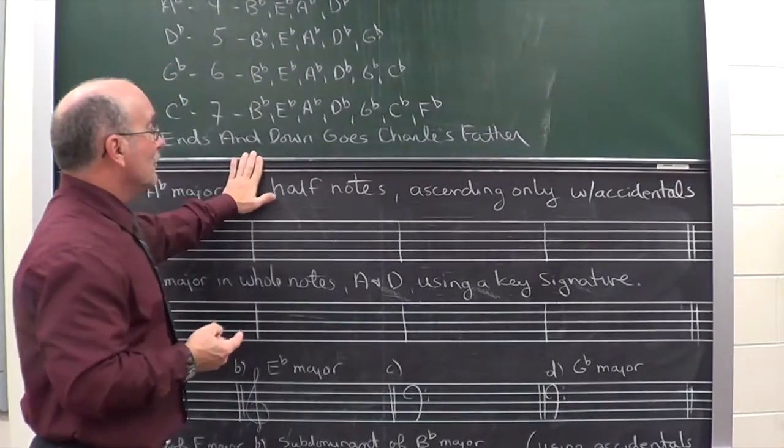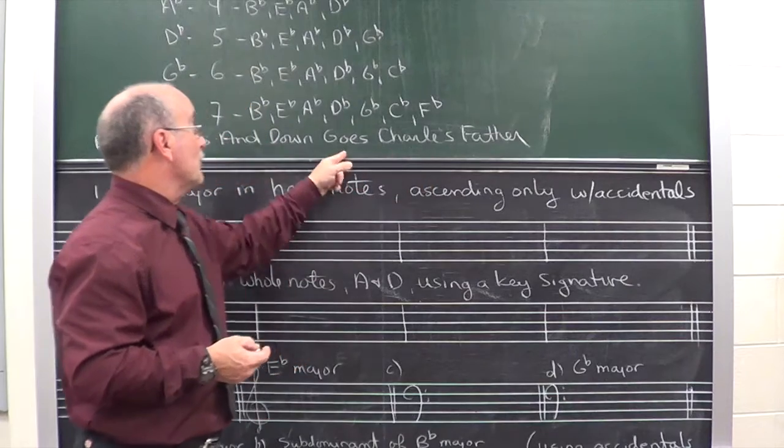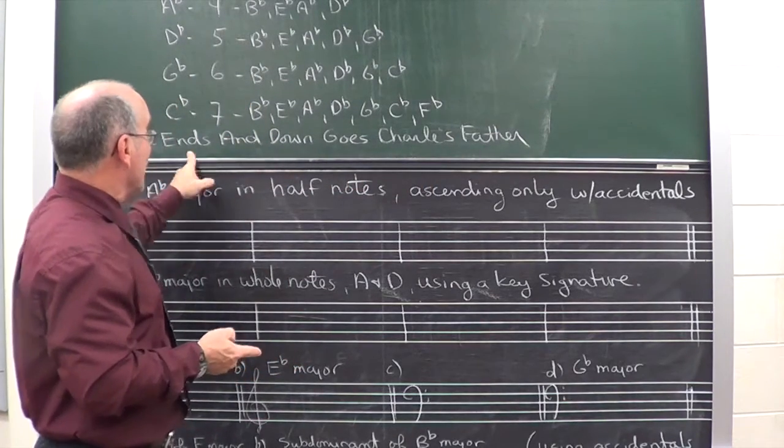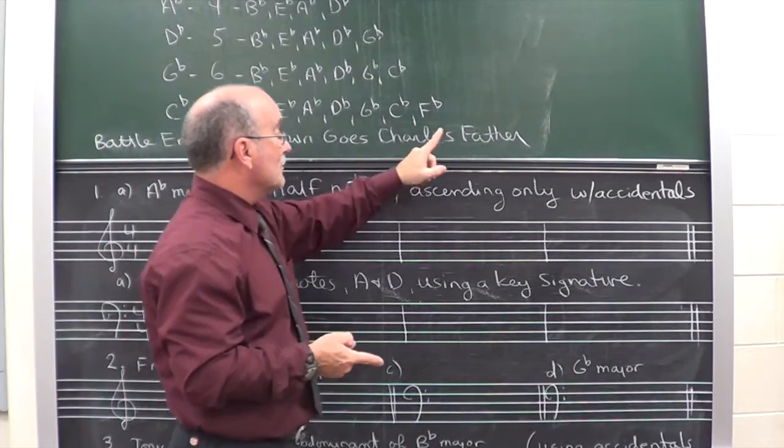And the rhyme remains the same. If you're doing the sharps, it's father, Charles, goals, down, and ends, battle. If you're doing flats, it's the reverse. Battle, ends, and, down, goals, Charles, father.